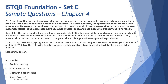Question number 24. A batch application has been in production unchanged for over two years. It runs overnight once a month to produce statements emailed to customers. For each customer, it goes through every account and lists every transaction in the last month. It uses a nested loop structure: outer loop for customers, middle loop for each customer's accounts, and inner loop for each customer's transactions. One night the application terminates prematurely, failing to email statements to some customers when it encounters a customer with one account for which no transactions occurred in the last month.